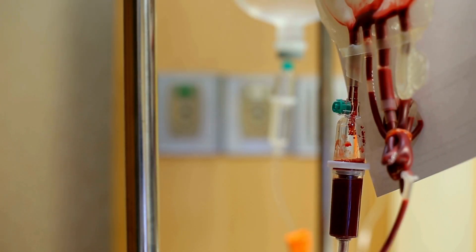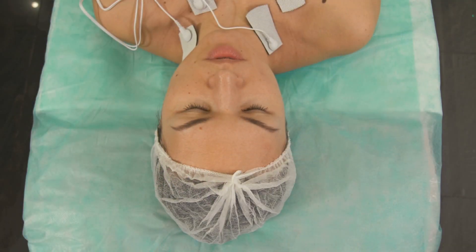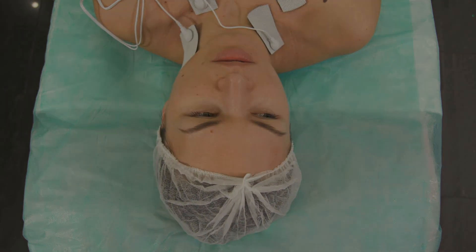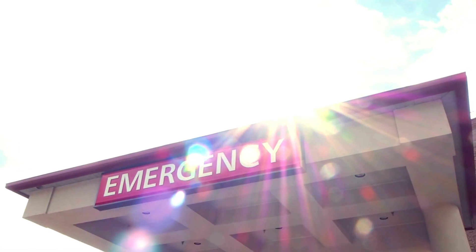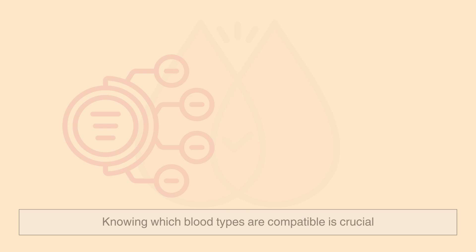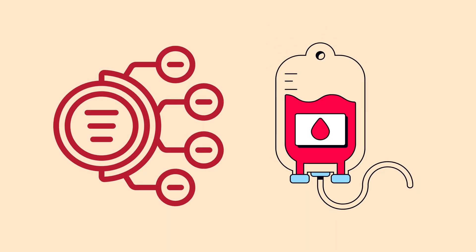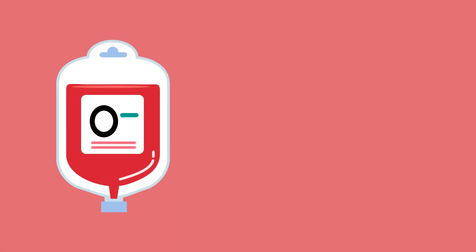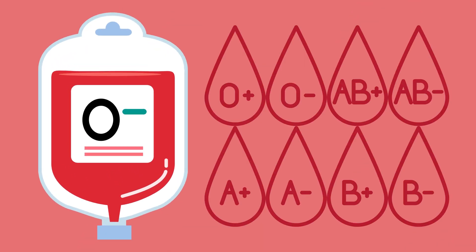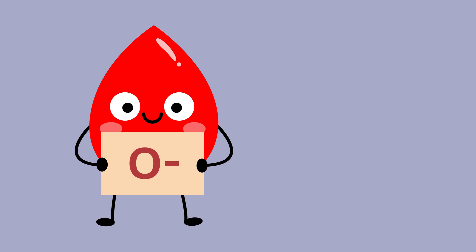Receiving the wrong type of blood can trigger a severe immune response, leading to life-threatening complications. In emergency situations, knowing which blood types are compatible is crucial. Type O negative is the universal donor, meaning it can be given to any blood type. However, people with O negative blood can only receive O negative blood.